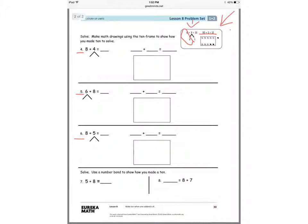If you're done with numbers 4, 5, and 6, you can go ahead and start 7 and 8. Here are the directions. Solve. Use a number bond to show how you made a 10.